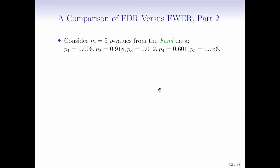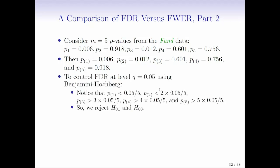So we can go back to the fun data, where we have these five P values. We order them again. So the smallest is 0.006, the largest is 0.918. And we can think about applying Benjamini-Hochberg. So we need to compare the smallest P value to 0.05 over 5, the second smallest P value to 2 times 0.05 over 5, the third to 3 times 0.05 over 5, the fourth to 4 times 0.05 over 5, and finally, the fifth gets compared just to 0.05.